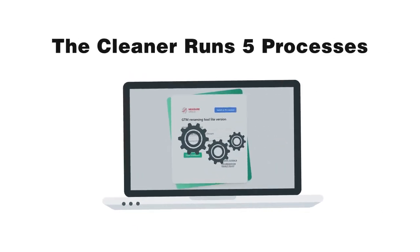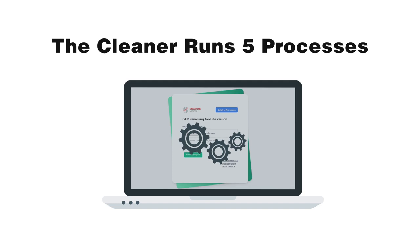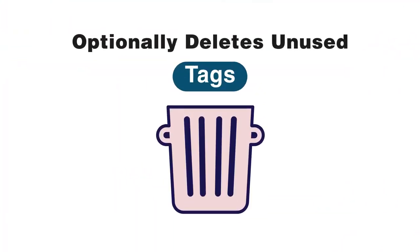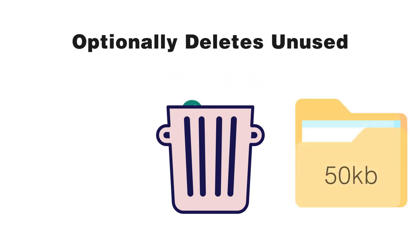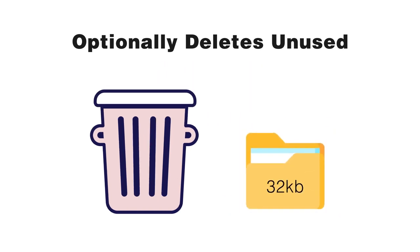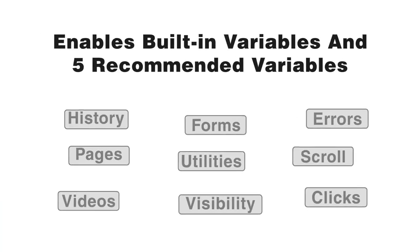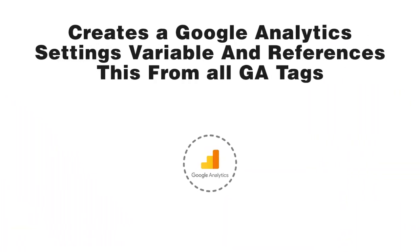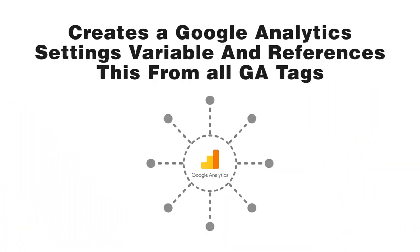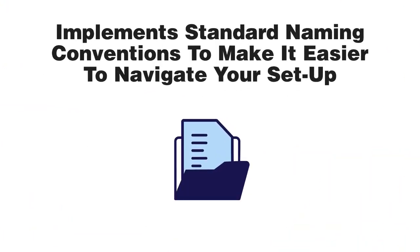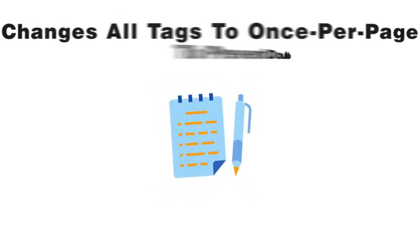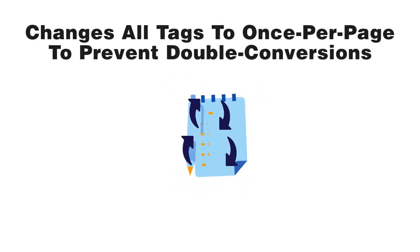The cleaner runs five processes to ensure your account is set up using best practices: optionally deletes unused tags, triggers, and variables to reduce the size of the container; enables built-in variables and five recommended variables; creates a Google Analytics settings variable and references this from all GA tags; implements standard naming conventions to make it easier to navigate your setup; and changes all tags to once per page to prevent double conversions.